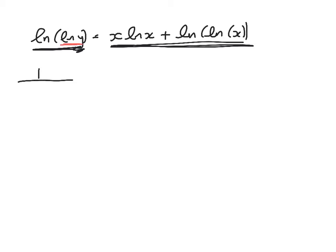So it's going to be 1 over log of y times the derivative of this thing, which is 1 over y, times dy by dx, because we're differentiating with respect to x.